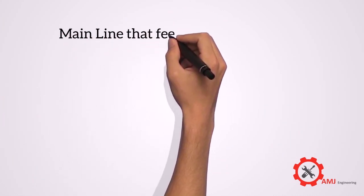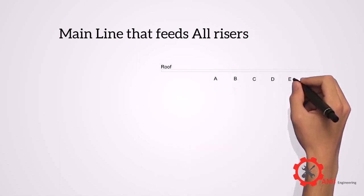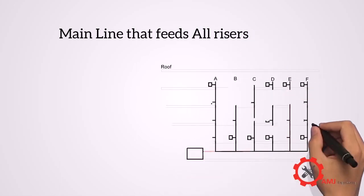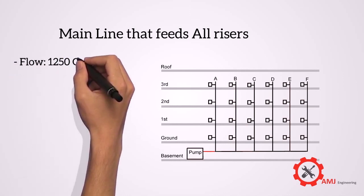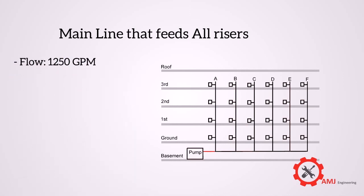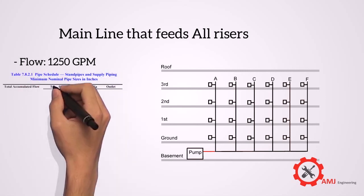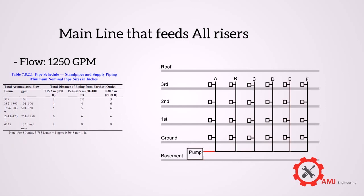For the main pipe feeding all risers, the flow is the sum of 500 GPM in riser F and 250 GPM in each of the other 5 risers. So the total is 1750 GPM. But since the total not to exceed 1250 GPM, then 1250 GPM to be considered. No matter the pipe length, the size should be 6 inches as per the pipe schedule table.